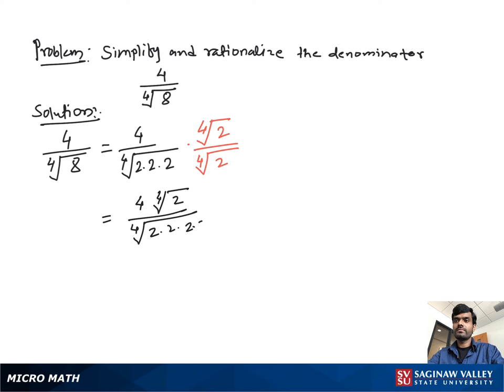Then we have 4 times fourth root 2 over 2. As you see, 4 divided by 2 is 2, so we get 2 times fourth root 2, and this is our final answer.